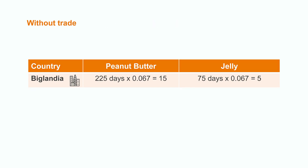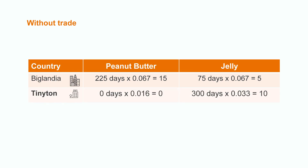So, Biglandia could spend 225 days making peanut butter and 75 days making jelly. This would give them 15 tons of peanut butter and 5 tons of jelly. Tinyton will spend all 300 days making jelly, giving them 10 tons of jelly.